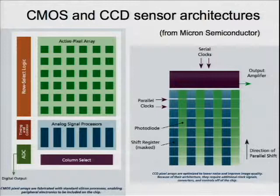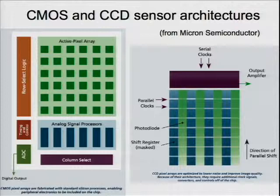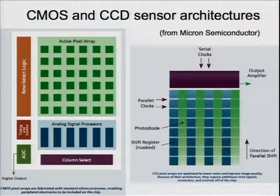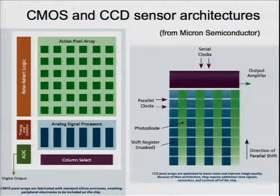A Micron diagram comparing CCD and CMOS architectures shows a photodiode and a masked shift register: shift from the photodiode into the masked region, then clock out into readout structures, through a horizontal CCD across the chip and up to an output amplifier. You can do correlated double sampling in one place out at the edge, with a single differencing circuit instead of one per column as in CMOS, getting a clean output signal.